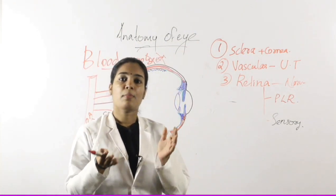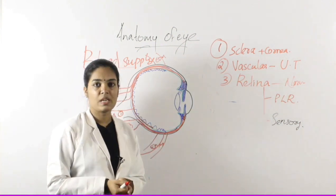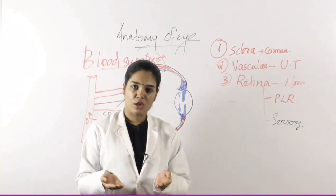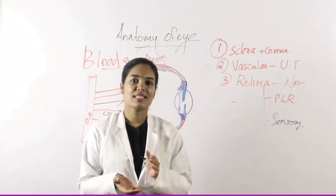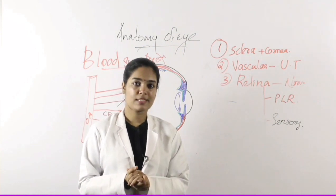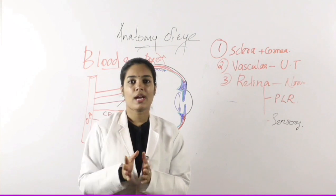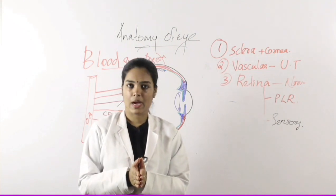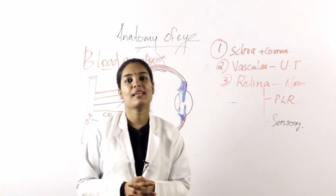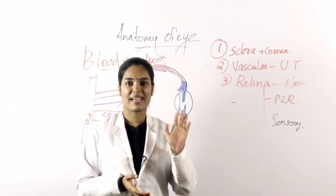This is the basic structure of the eye and its blood supply. Today we have studied about the walls of the eye, the internal structures, and the blood supply — a small but complete description of the anatomy of the eye. In the coming classes we will study each part in detail. Till then, bye.